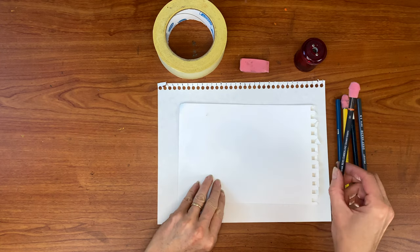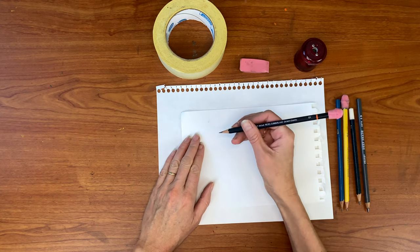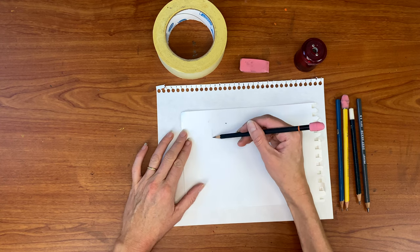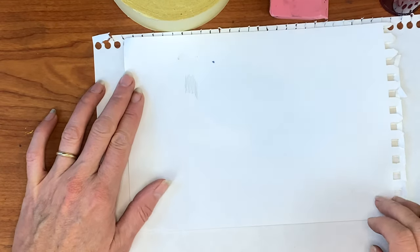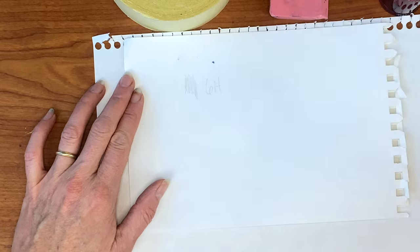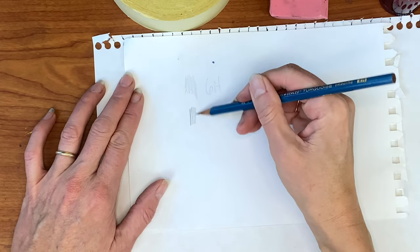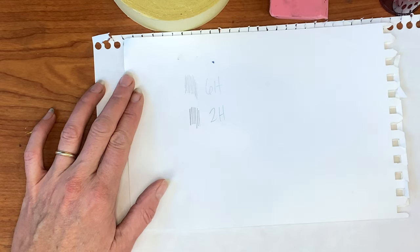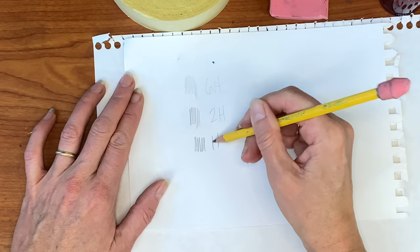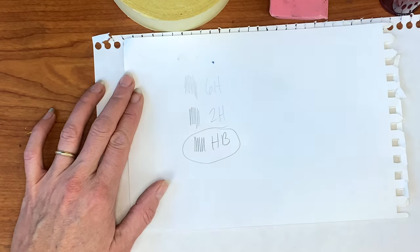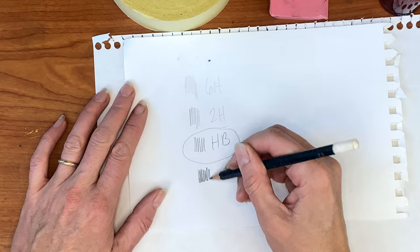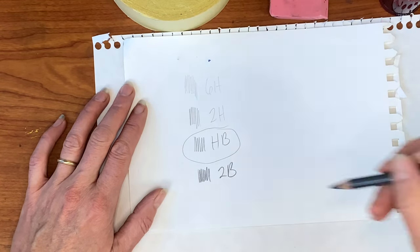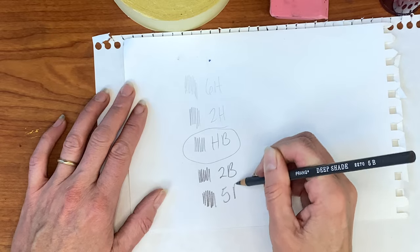So the H stands for hard. And the H pencils are always lighter. So I'll show you what they look like. This is the 6H pencil. And you can see it's quite light. And then the 2H pencil is a little bit darker. The HB pencil is even darker still. And like I was saying before, that's sort of the middle one. So these two are light pencils. That's your standard middle pencil. And then we get into the dark pencils, the B pencils and B stands for black. 2B you can see is darker and then 5B is the darkest one.